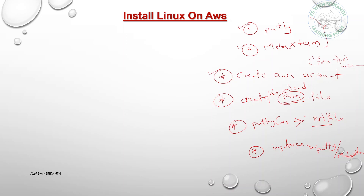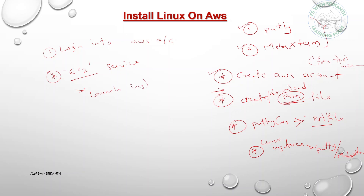With the help of this private file you can log into your Linux instance. One step in between is how we create that AWS instance and where we create the PEM file. For that, log into your AWS account, go to the EC2 service — Elastic Cloud Computing — and then go to Launch Instance, choose your AMI, and proceed through the steps.